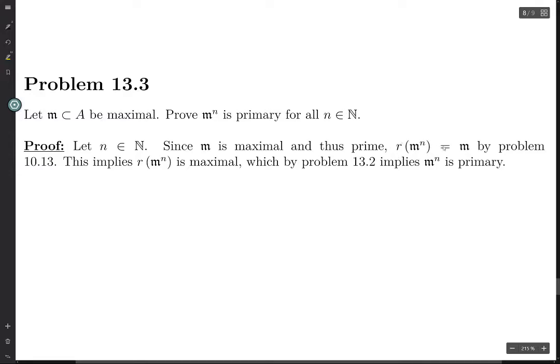And so now, this radical ideal is equal to m and m is maximal. So this radical ideal r of m to the n is maximal.